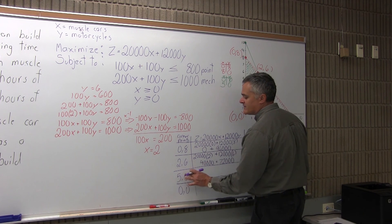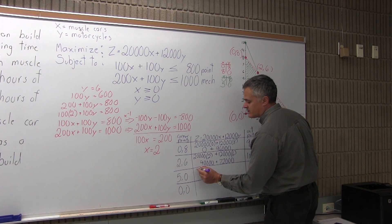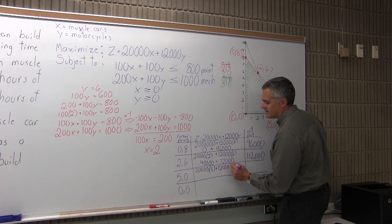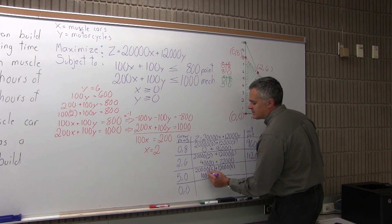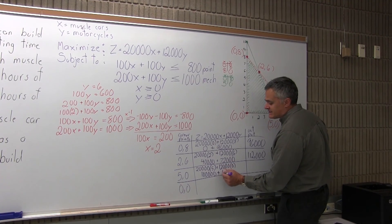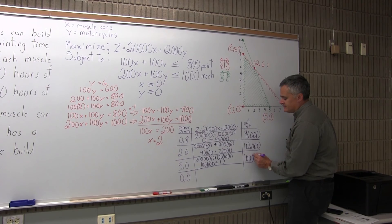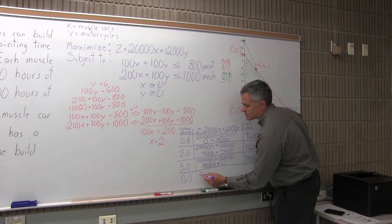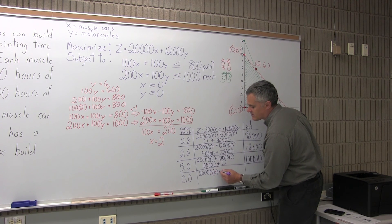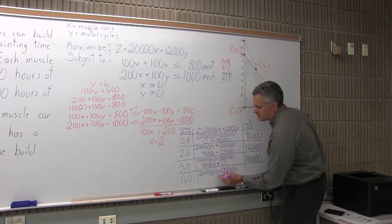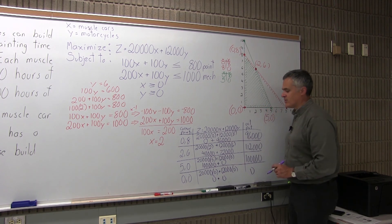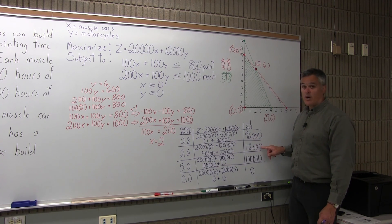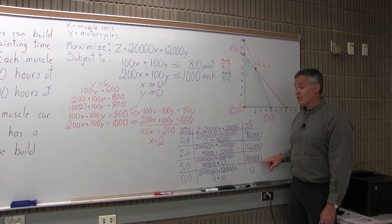For corner point (5, 0): 20,000 times 5 is 100,000, and 12,000 times 0 is 0, so profit is $100,000. For (0, 0): you don't make anything, so 20,000 times 0 plus 12,000 times 0 equals 0 — a profit of $0, which is absolutely not the one you want. The possible profits are $96,000, $112,000, $100,000, or $0.